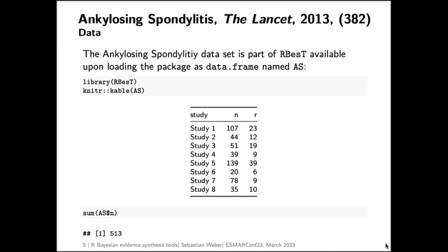When you load the RBesT package, you immediately have available the AS dataset which is analyzed in this example. Each row of the dataset contains the summary data of a historical study, reporting the number of patients in the control group and the number of responders. Overall, this dataset consists of more than 500 patients of historical data.